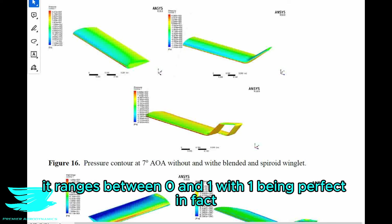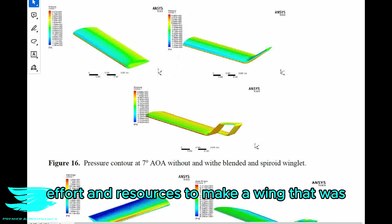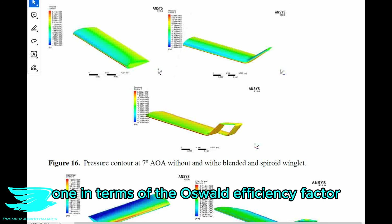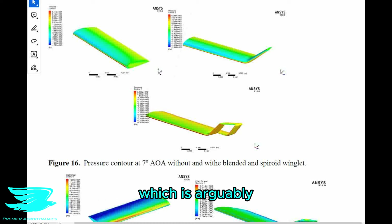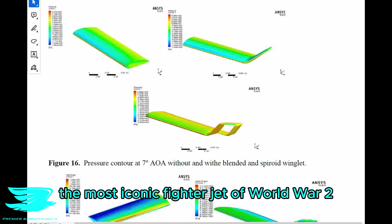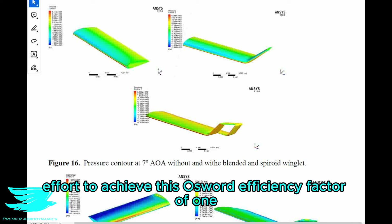Traditionally, it ranges between 0 and 1, with 1 being perfect. For a very long time, aeronautical engineers put in so much effort and resources to make a wing that was 1 in terms of Oswald efficiency factor. In fact, the Supermarine Spitfire, which is arguably the most iconic fighter jet of World War II, was made with an elliptical wing in an effort to achieve this Oswald efficiency factor of 1.